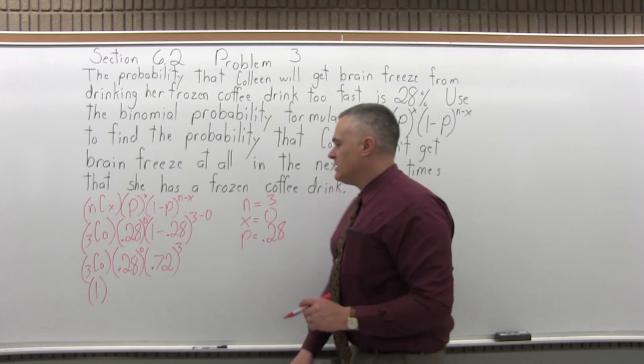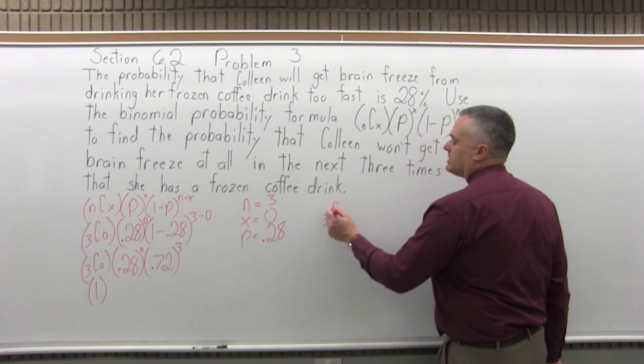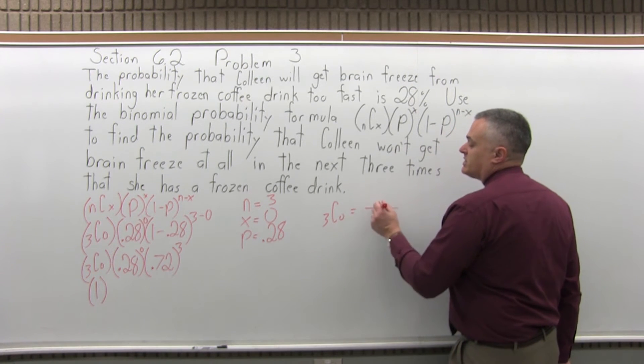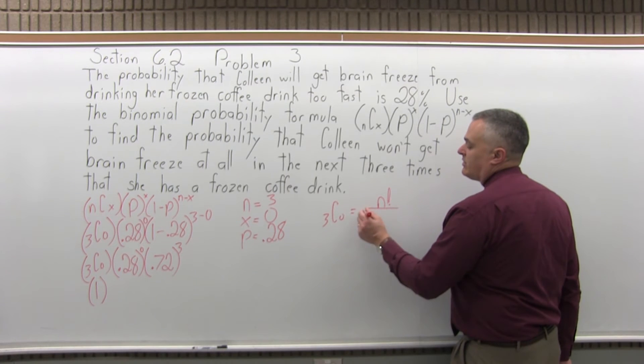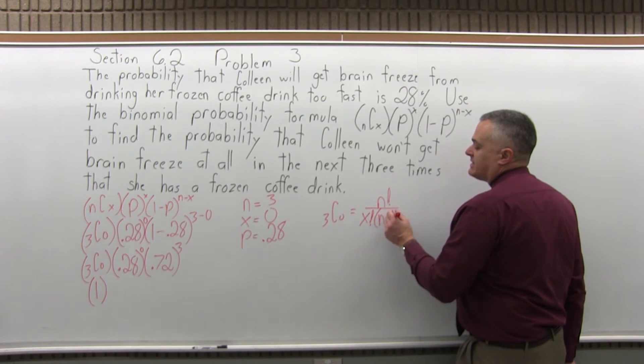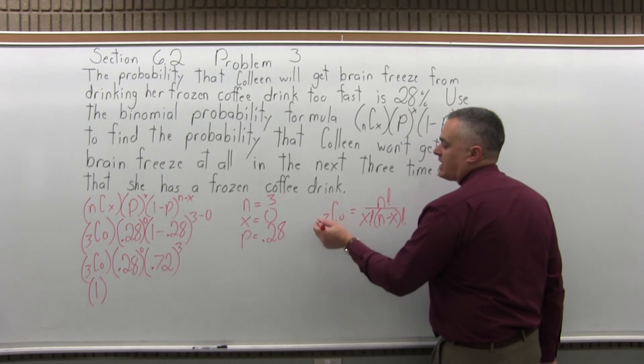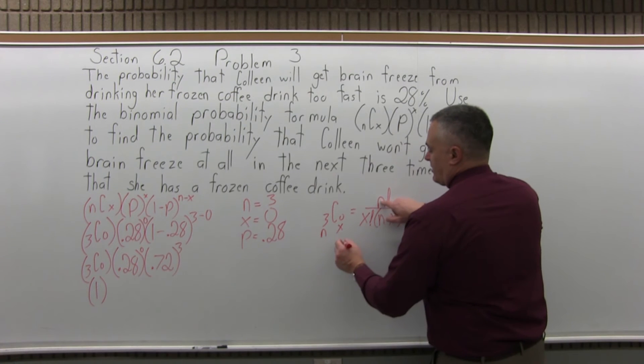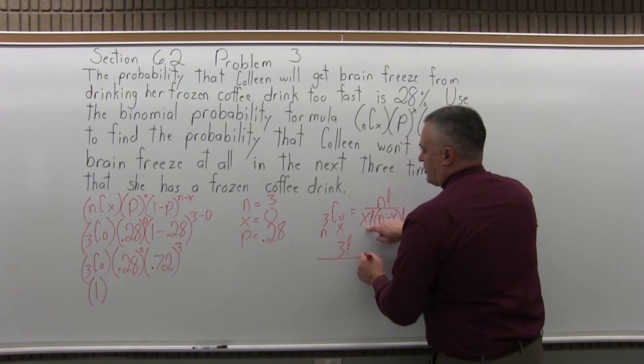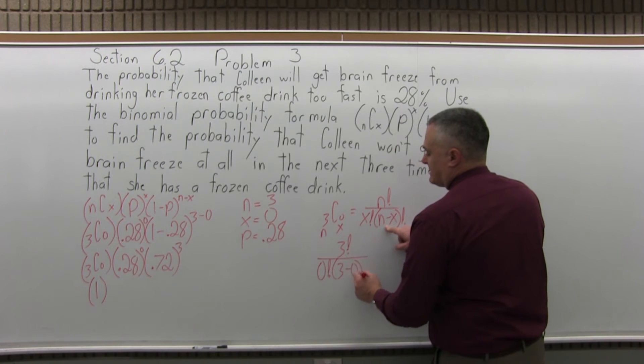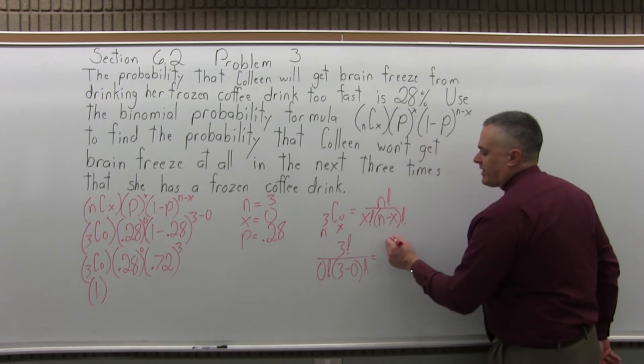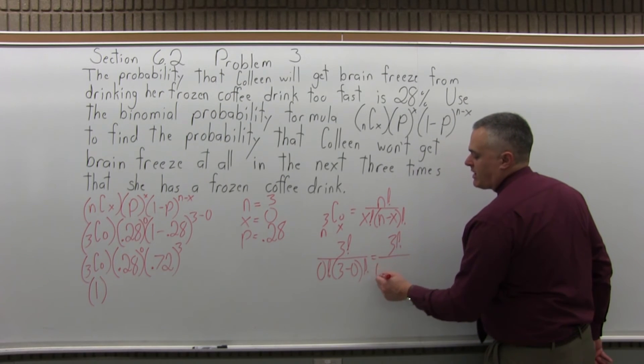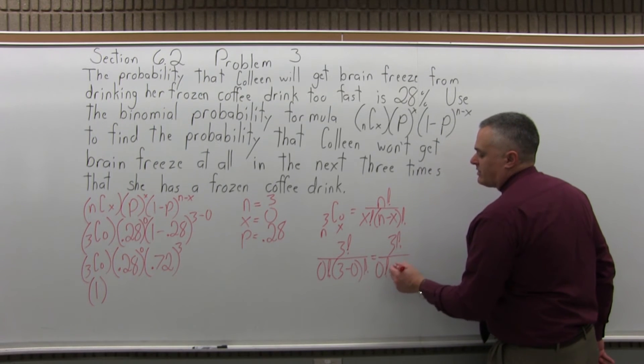Now you may or may not remember that. Let's say you don't remember. So off to the side, you say, okay, three combination zero. I'm going to use the combination formula, which is n factorial over x factorial times n minus x in parentheses factorial. The larger number is the n and the smaller number is the x. So to fill this in, the n factorial will be 3 factorial, and in the denominator, the x factorial will be 0 factorial. Inside the parentheses, n minus x will be 3 minus 0 factorial. And the 3 minus 0 I can clean that up to just 3. So 3 factorial on the top and underneath 0 factorial times 3 factorial.